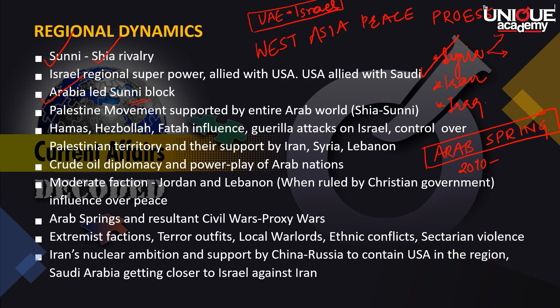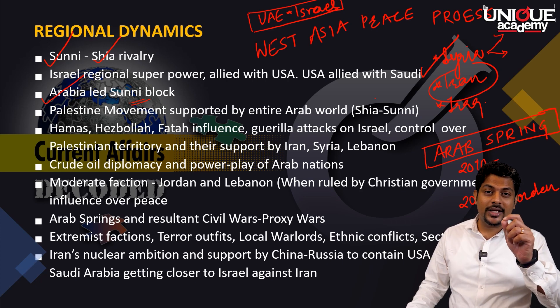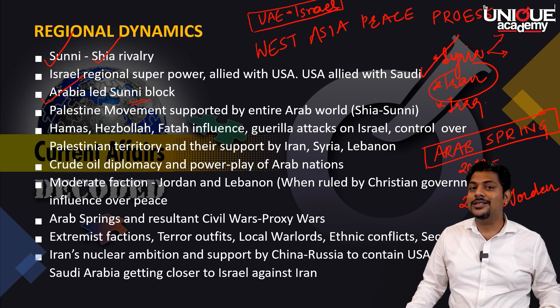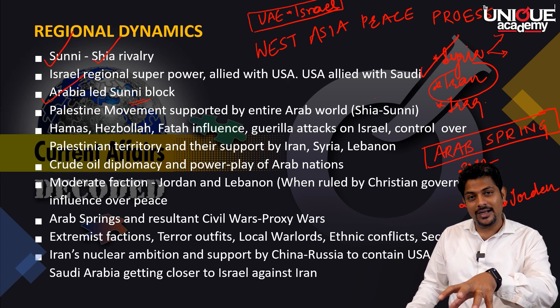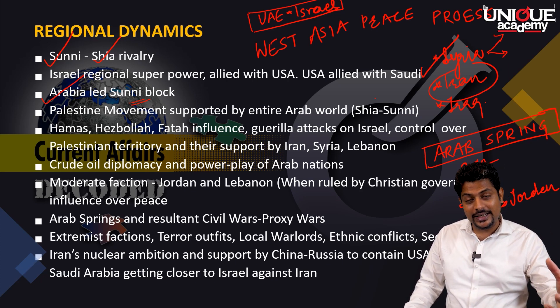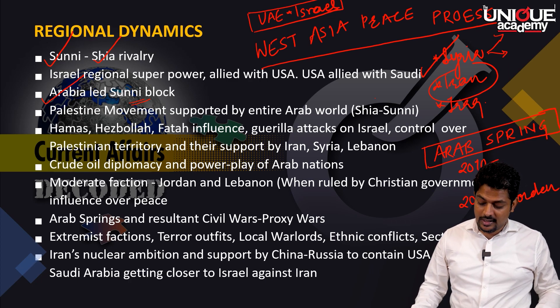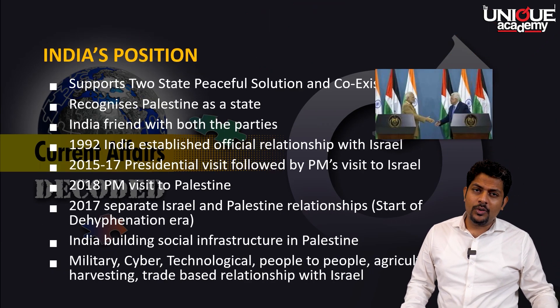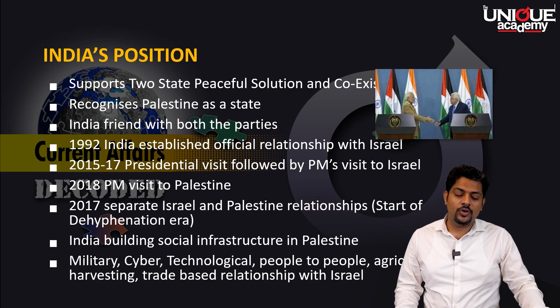In 2019 and 2020, this Arab Spring is getting back, and we are seeing examples in Jordan with lot of popular movements against the government. Another very important point about Iran is that the Iran-USA nuclear peace deal has also broken down, and it is resulting in again a tension in the region. This is also connected to the bigger topic of the West Asia peace process.